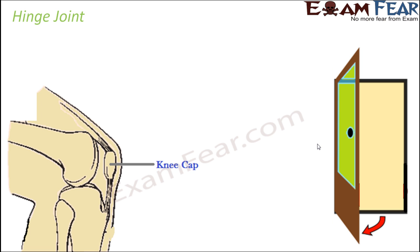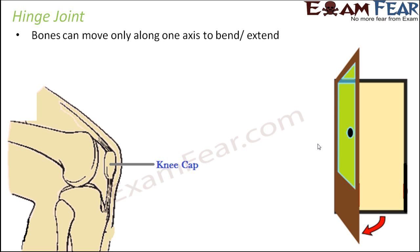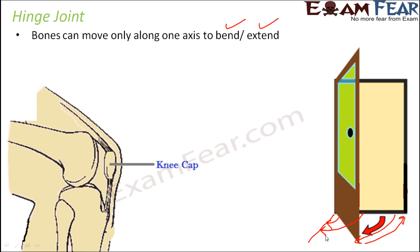Moving ahead to the hinge joint — here bones can move only along one axis to bend or extend. Think of the scenario when you open a door: the door can either go this way or this way, moving at an angle. At the maximum it can move to a certain angle, no more. So from one position to another it can move at any angle, but it can only extend or bend. It cannot rotate either partially or fully. The best example of a hinge joint would be the kneecap.